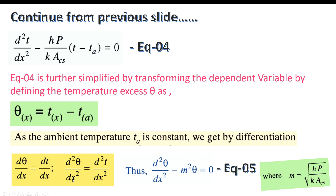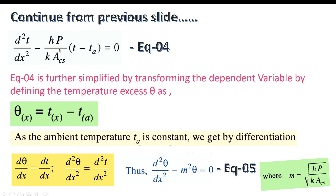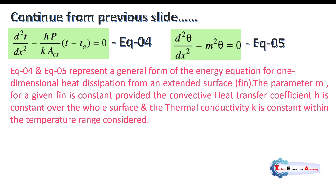Equations 4 and 5 represent the general form of the energy equation for one-dimensional heat dissipation from extended surfaces or fins. The parameter m is constant for a given fin, provided the convective heat transfer coefficient h is constant over the whole surface, thermal conductivity k is constant within the temperature range considered, the perimeter P is constant, and cross-sectional area A is constant.